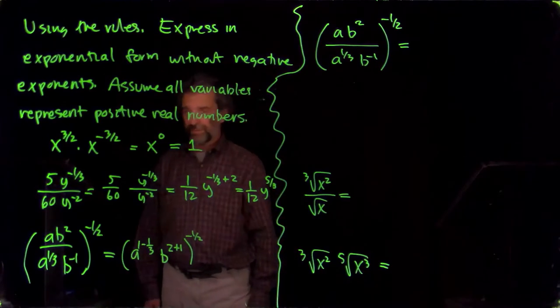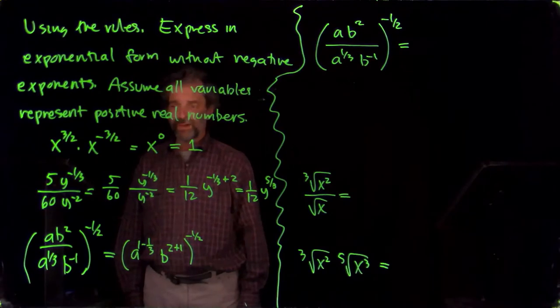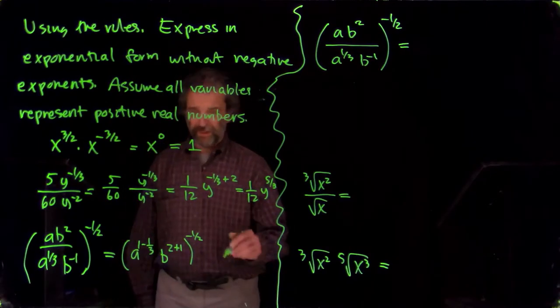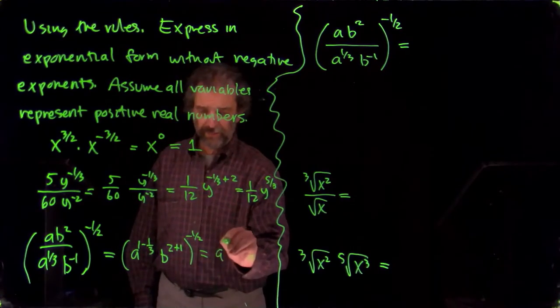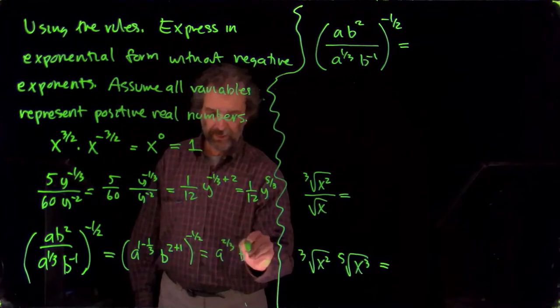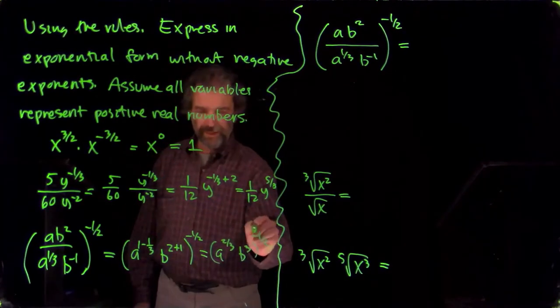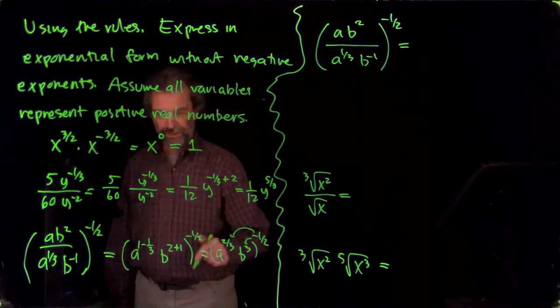So a over a to the one-third is a to the first minus one-third, and b squared over b to the minus one is b to the two plus one. And that's going to be then a to the two-thirds, b cubed to the minus one-half. And now I'm going to multiply these exponents across. It's this to that power times that to that power. That's one of the exponent rules.